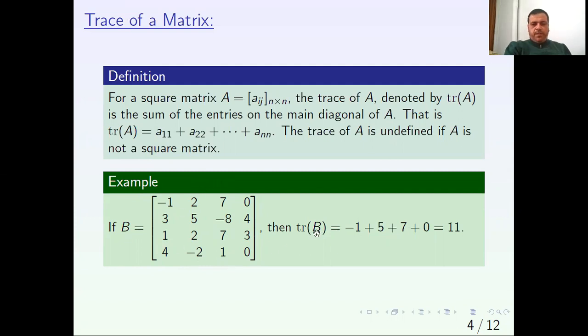The trace of B equals negative 1 plus 5 plus 7 plus 0, which equals 11.